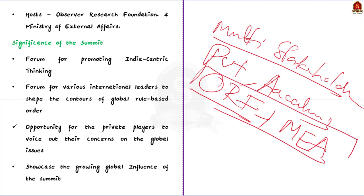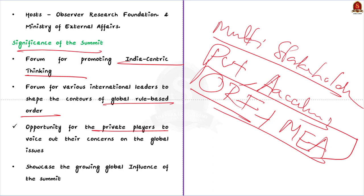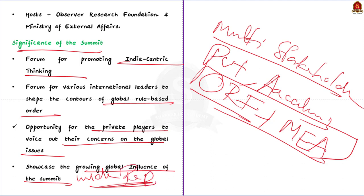Regarding the significance of the summit: first, it acts as a forum for promoting Indian-centric thinking. Second, it acts as a forum for various international leaders to shape the global rule-based order. Moreover, it provides an opportunity for private players to voice concerns on international issues. Third and most importantly, with the growing global influence of the summit and widespread representation of leaders discussing a wide array of global issues, it serves as an ideal forum for increasing India's soft power.